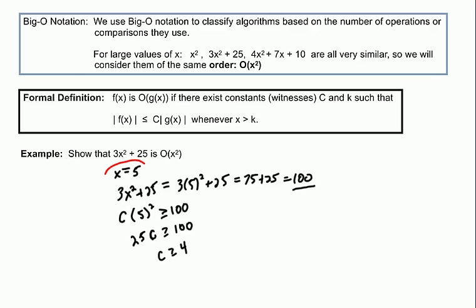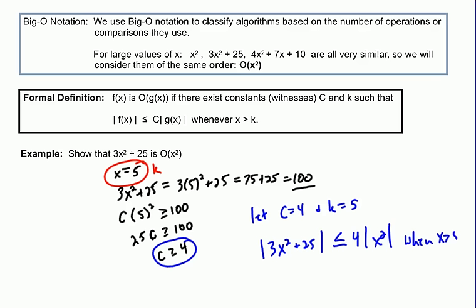So, what we really did here was come up with a k value, 5, and a c value, 4. If we let c equal 4 and k equal 5, we can be pretty confident here that 3x²+25, which is our f(x), is less than or equal to 4 times x² when x is greater than 5.